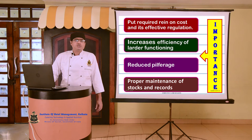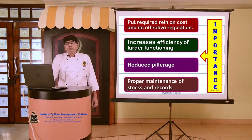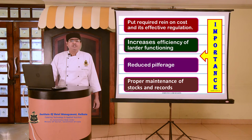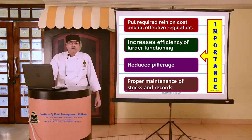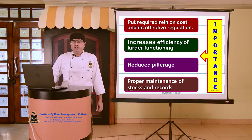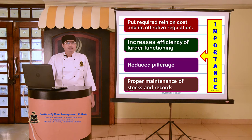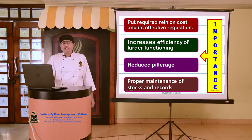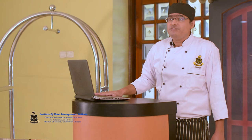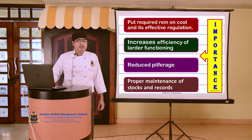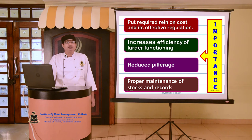Coming to the importance of the larder section: the larder control process is very significant because it deals with high-risk food items. It puts the required restraint on cost and its effective regulation. When we maintain registers and find the synergy between what has been ordered, what has been utilized, and what is left over, cost control automatically comes into process. It increases the efficiency of larder functioning. When we calculate yield percentage, it gives us the loss through the trim, and if the trim percentage is higher than standard, corrective action can immediately be taken.